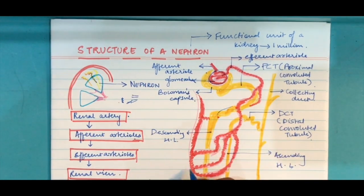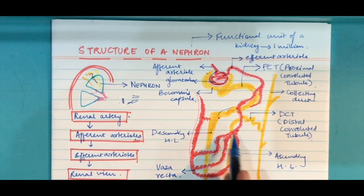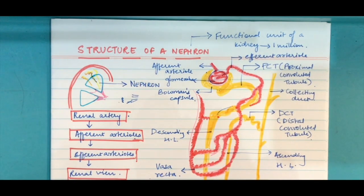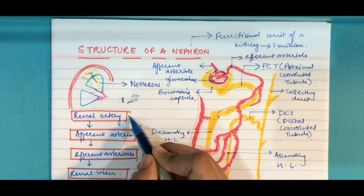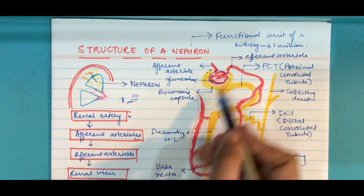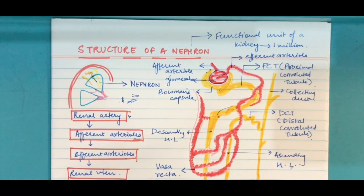This efferent arteriole now forms all these kind of small capillaries known as vasa recta. This vasa recta is responsible for reabsorption of important probably glucose, amino acids, different electrolytes from the Henley's loop. Vasa recta again moves into the renal vein. You can see the cycle: renal artery, then afferent arteriole, then it gets purified, it goes to efferent arteriole, from efferent arteriole it gets reabsorbed, it moves into the renal vein.